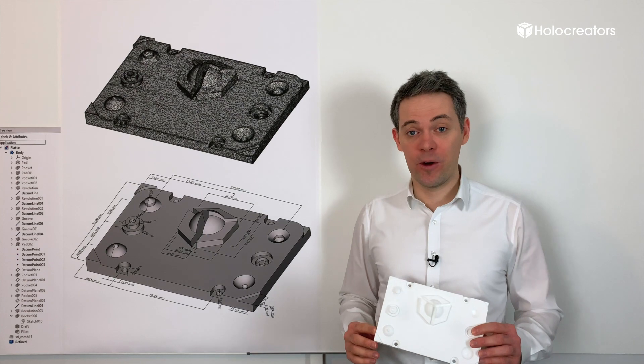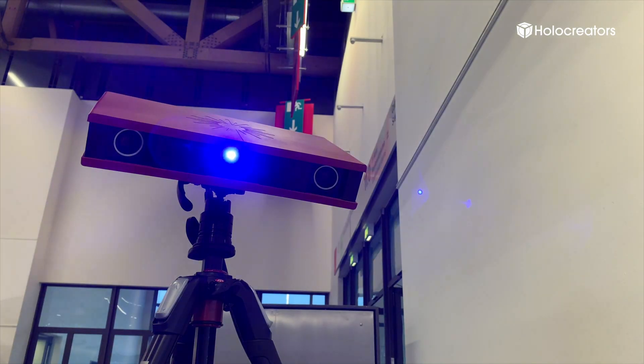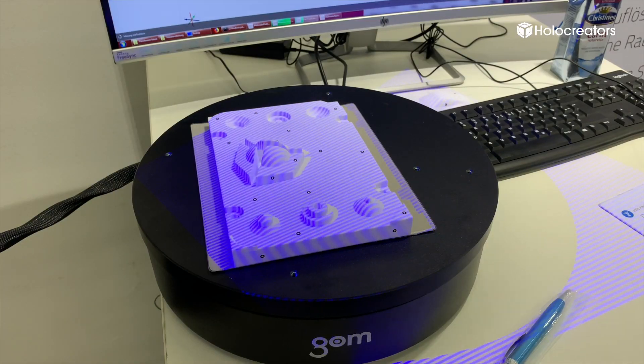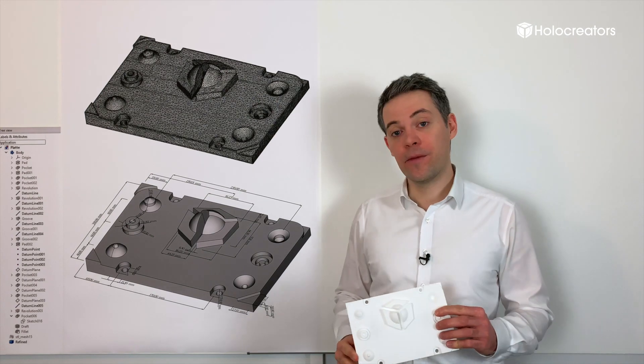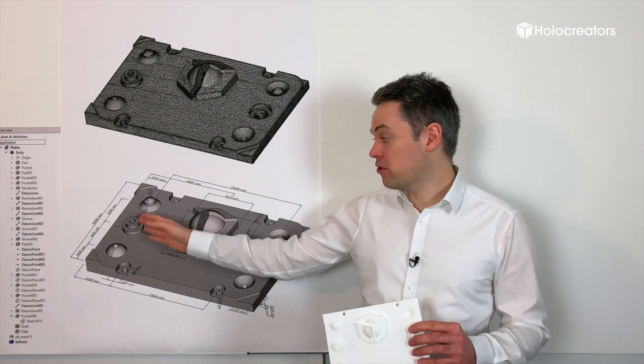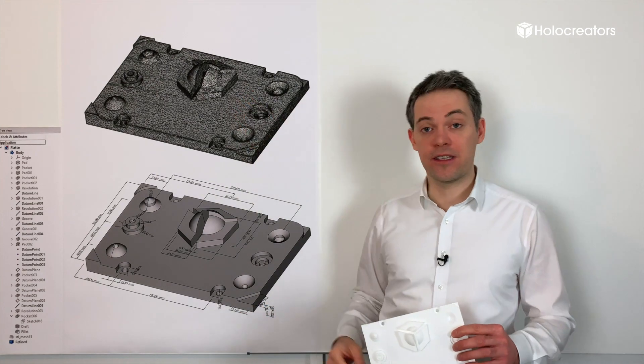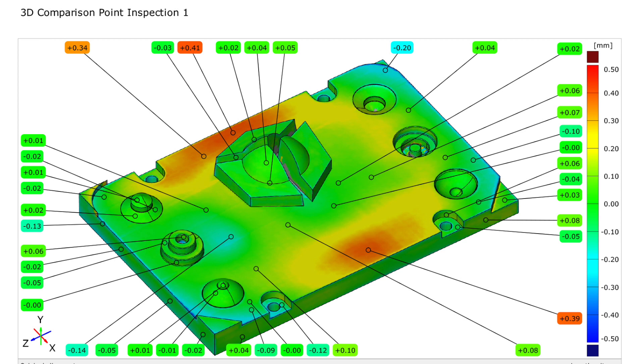You can see there in the video we used the GOM Core scanner, a structured light scanner, and scanned the part. The result was this 3D scan up here. Then in the next step I superimposed the parametric model with the 3D scan, and now you can see in the deviation report how in some areas we have more deviation.